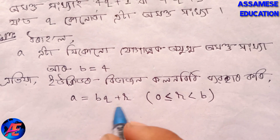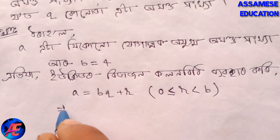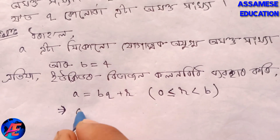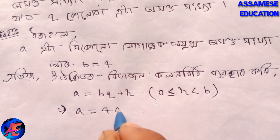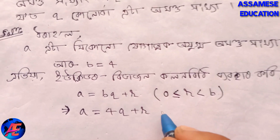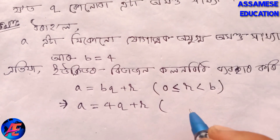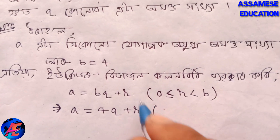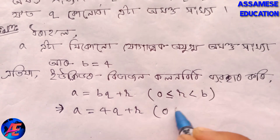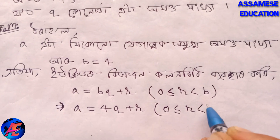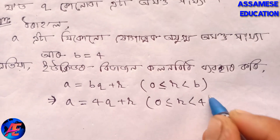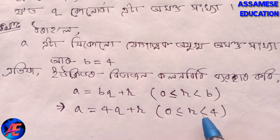A is equal to bq plus r. If a and b are given, then a is equal to 4q plus r. Here, b is equal to 4, and 0 is less than or equal to r, which is less than b. So r can be 0, 1, 2, or 3.